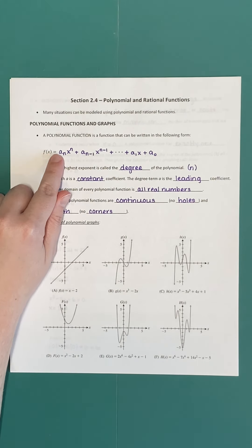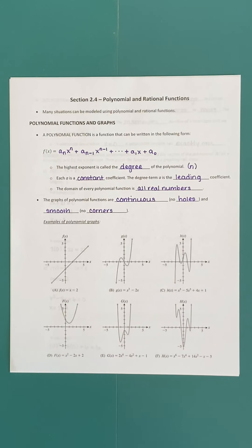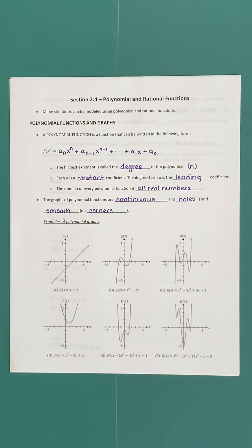It's worth talking about domain and range for polynomial functions. Domain means all the numbers that we could plug into the function — all the different inputs. Every polynomial function has a domain of all real numbers, meaning the input variable x can take on any value we want. For graphing purposes, this means our graph is going to continue all the way from the left-hand side of the coordinate plane to the right-hand side, from negative infinity to positive infinity along x.